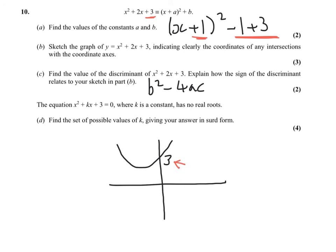And then part D, find the set of possible values of K where K is a constant. Basically you've got to, K is B, so you've got K squared minus 4 times 1 times 3 is less than 0. And you've got to solve that. You should get limits, so you'll end up with something like this with a value here and a value here. And there your limits for K, and that's the day.